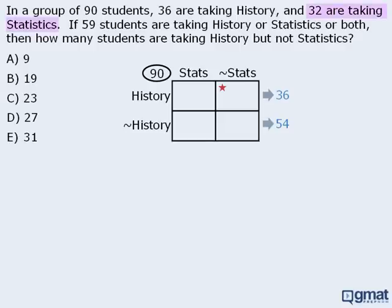Next, we're told that 32 students are taking statistics. Since those two boxes are reserved for students taking statistics, the sum of those two boxes must be 32. We also know that if 32 of the 90 students are taking statistics, then the remaining 58 students are not taking statistics, so the sum of those two boxes must be 58.